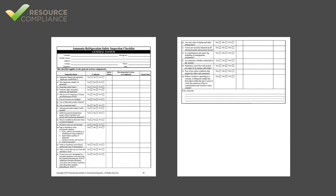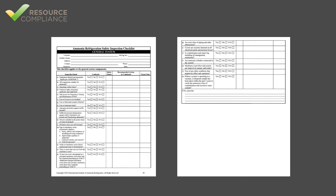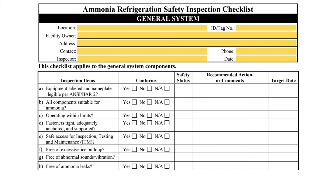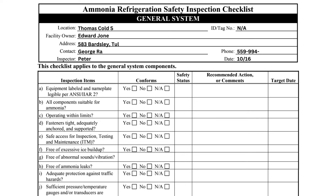The simplest part of completing the general inspection checklist is filling out the contact information. Each IIAR 6 checklist requires the inspector to indicate the location, owner, and physical address of the system. The contact's name and phone number should be the facility representative responsible for ensuring the inspection is completed. Additionally, the inspector must write his or her own name and the date of the inspection. The ID or tag number belongs in the upper right corner. Refrigeration systems are not always given a unique ID or tag number, so NA is often indicated here.